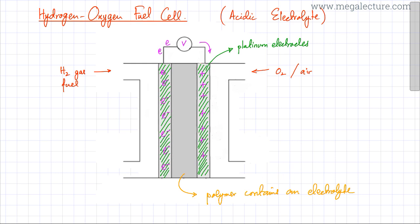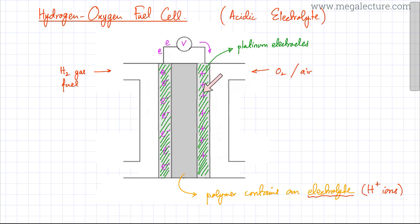The only difference compared to the alkaline hydrogen-oxidant fuel cell discussed in part 1 is that this electrolyte contains hydrogen ions — H⁺ ions. These H⁺ ions are generally introduced into the electrolyte by using phosphoric acid, and they help in conducting current and completing the circuit.